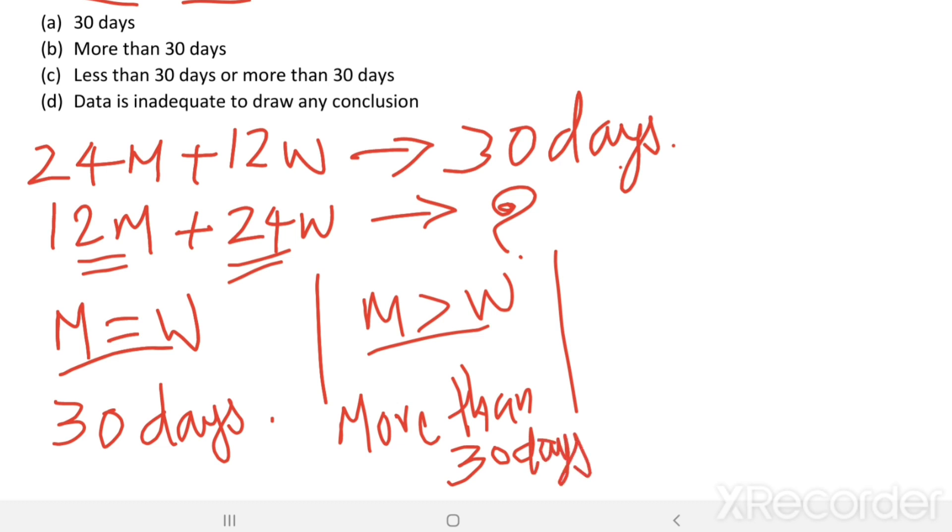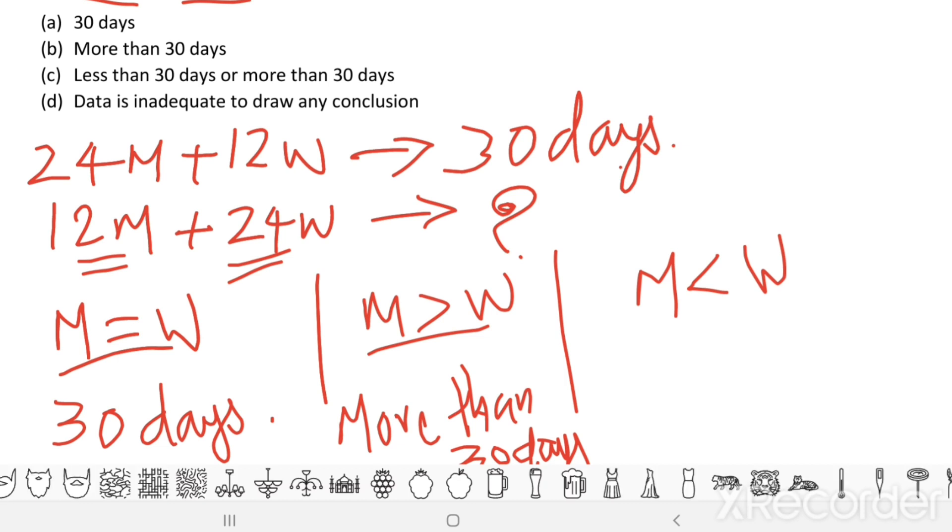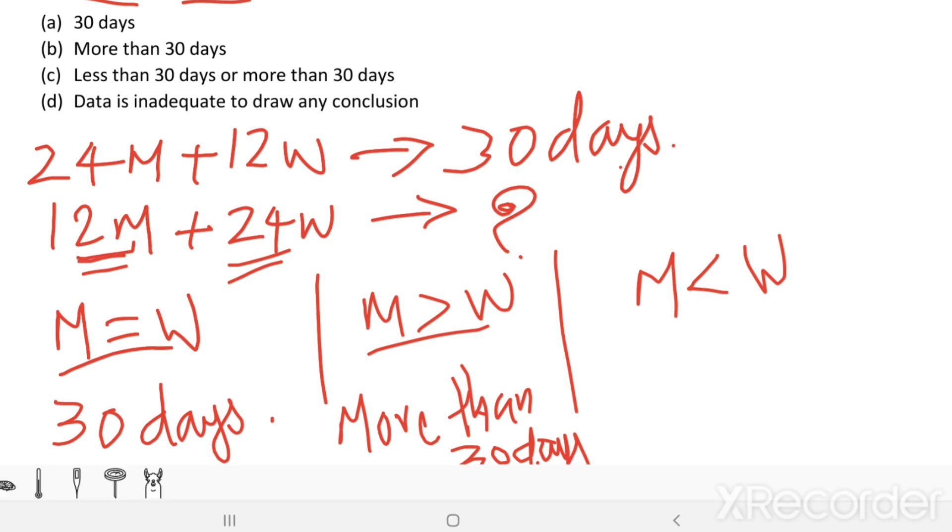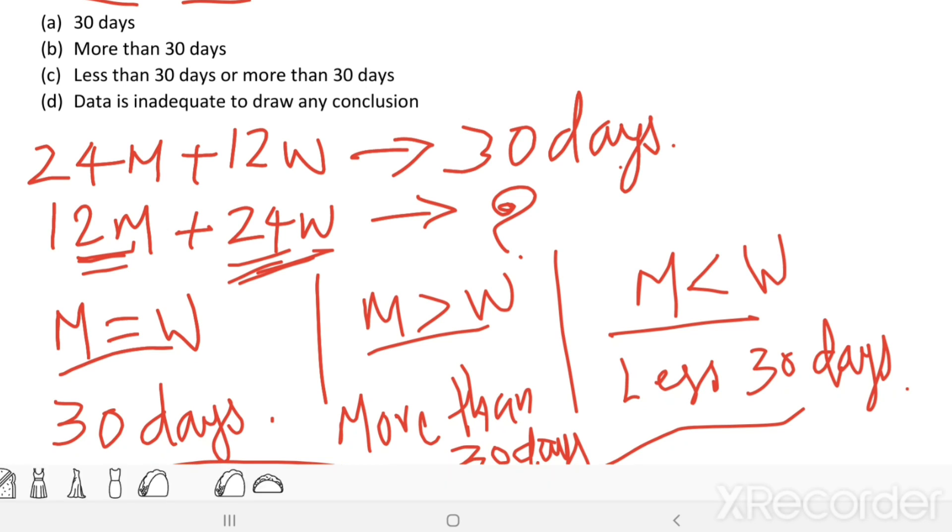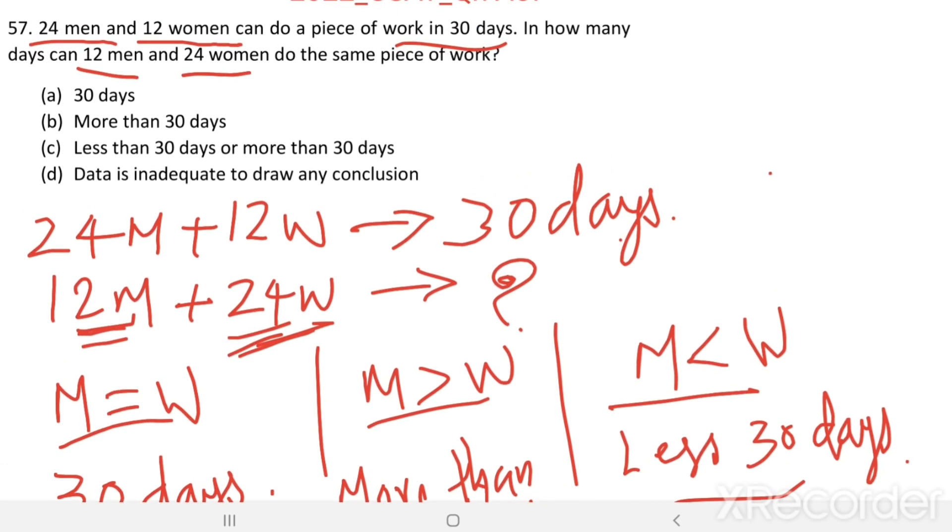If men is less efficient than women, then less efficient men are replaced by more efficient women. That means they can finish the work in less than 30 days. So all these possibilities are there, so we cannot make any conclusion to find one answer. So data is inadequate to draw any conclusion. Option D is the right answer.